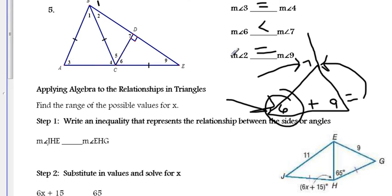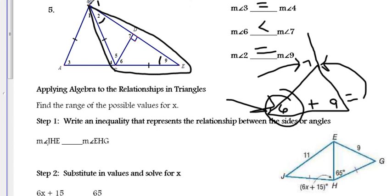For angles 2 and 9, looking at triangle CEB, this side is marked congruent to this side. So opposite angles of congruent sides are congruent — angle 2 is congruent to angle 9, which means their measures are equal.